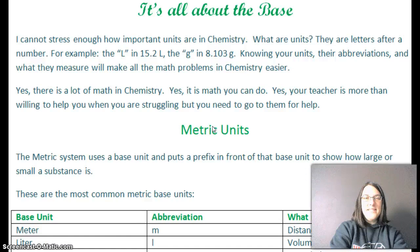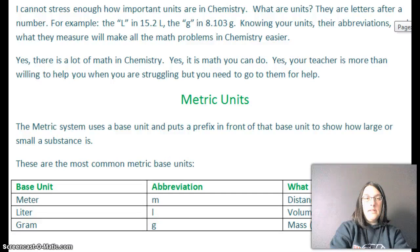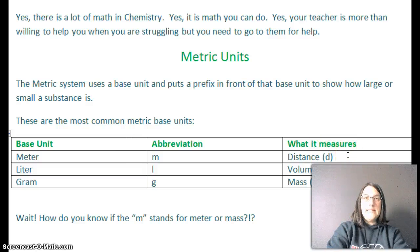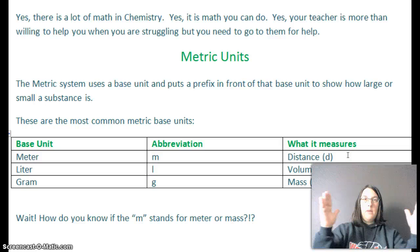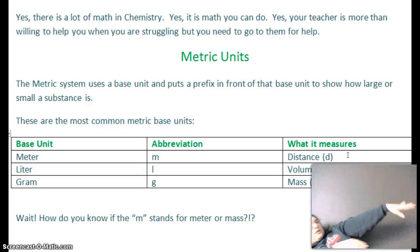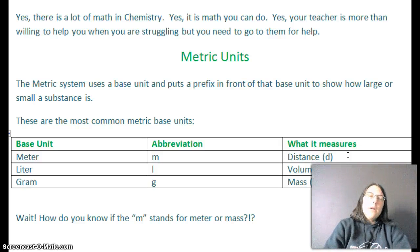Metric units. The metric system uses a base unit. It's all about the base. And puts a prefix in front of that base unit to show how large or small a substance is. There are a lot of metric base units, but really, we are going to be covering these three. You need to know that a meter is abbreviated M, and what it measures is distance. How big is a meter? Right now, show me with your hands. How big is it? About this big. It's the distance from your shoulder to your fingertips. So that's about a meter. It's about the same as a yard. It's about three inches bigger than a yard.